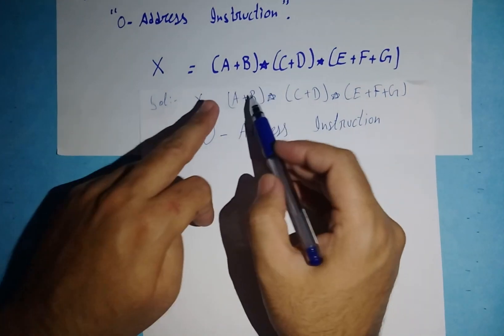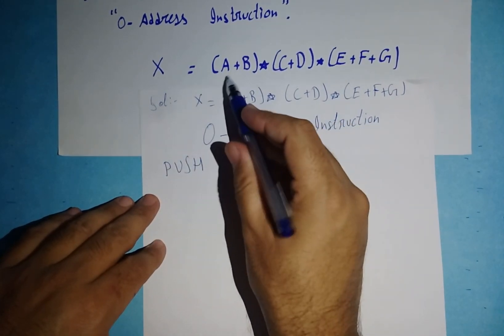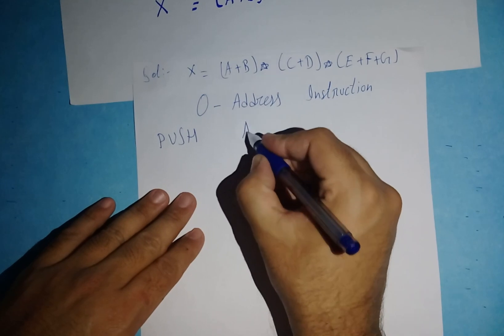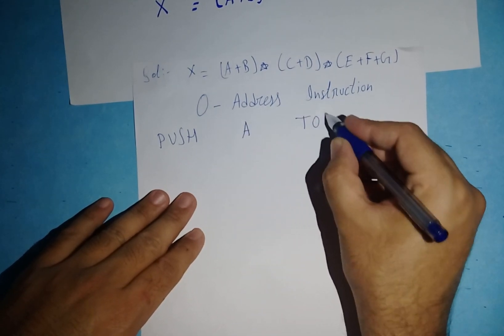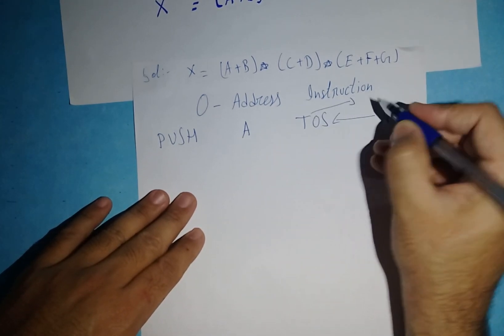So let's get started. I'll give the heading of zero-address instruction. Now I'm going to write a program using a computer register with zero-address instruction. First, I'll solve the first bracket. I will write PUSH and push variable A, so the value of A comes on top of stack.